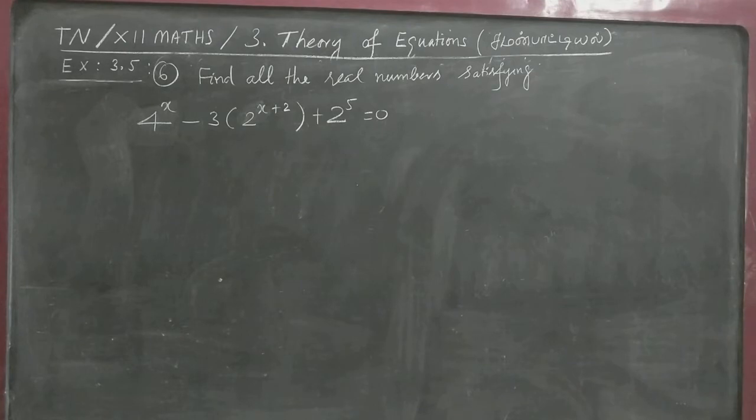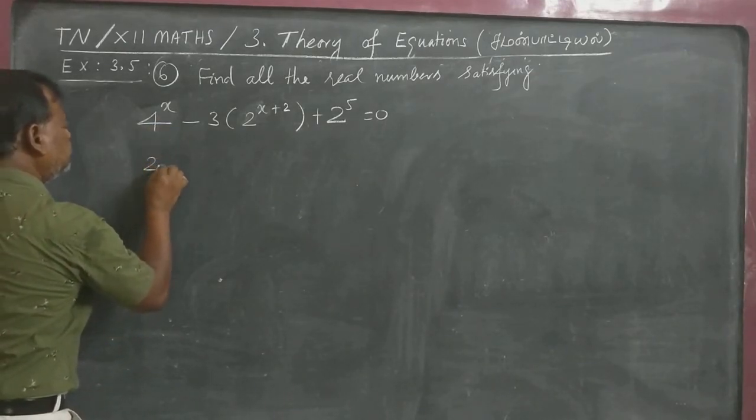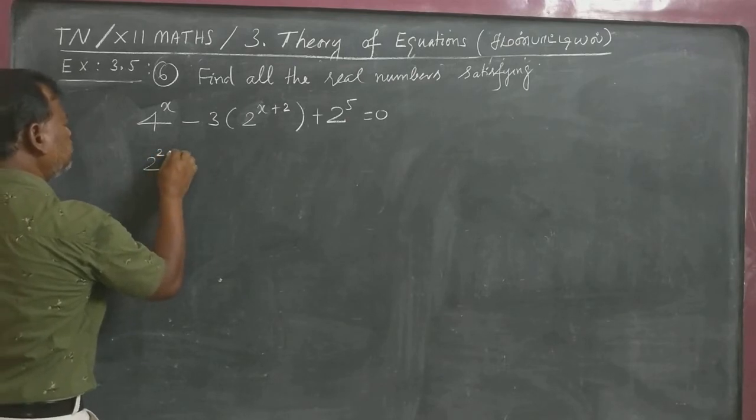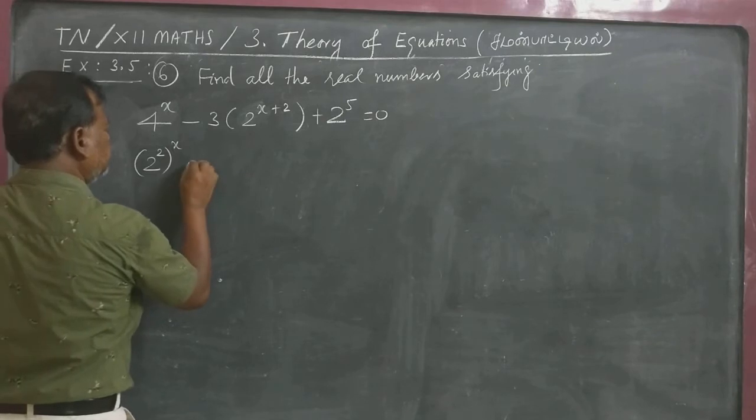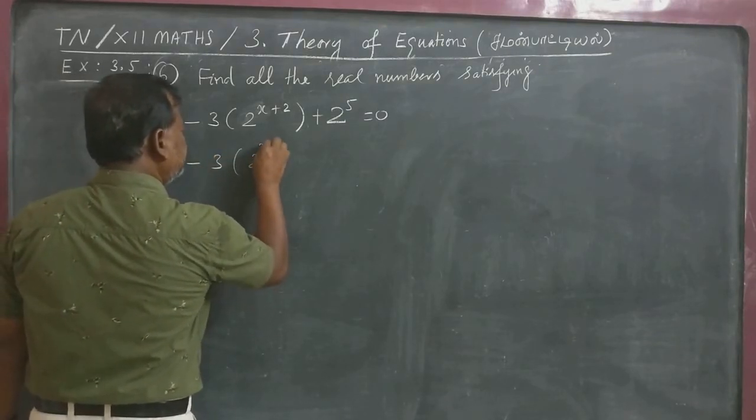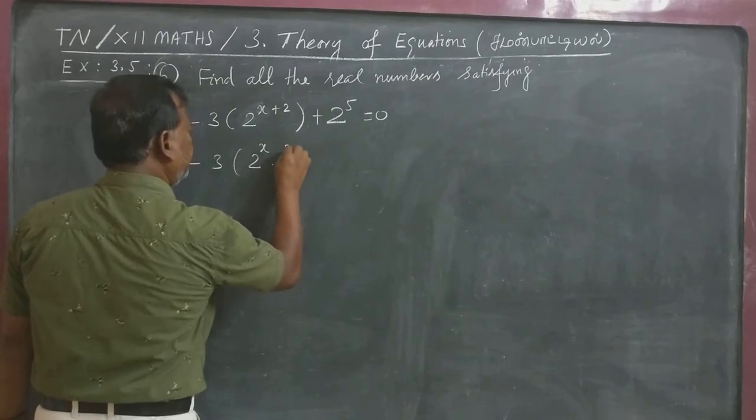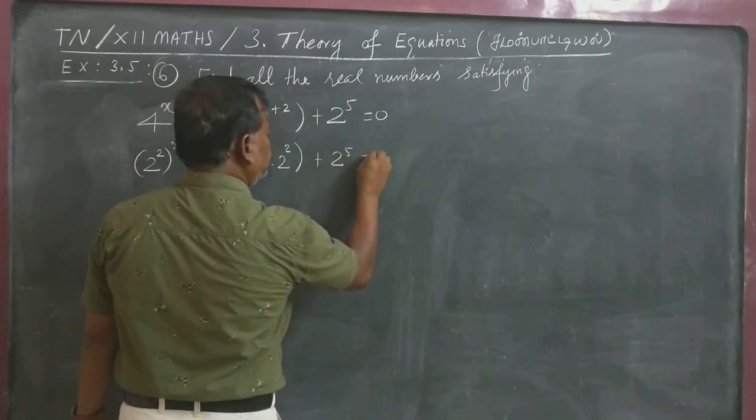Just simplify. This one is, we can write 2 power 2 the whole power X minus 3 into 2 power X into 2 square plus 2 power 5 is equal to 0.